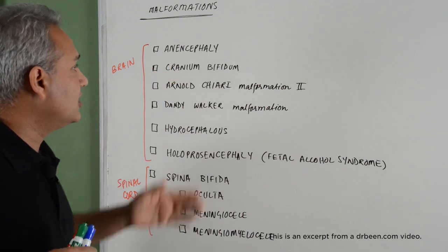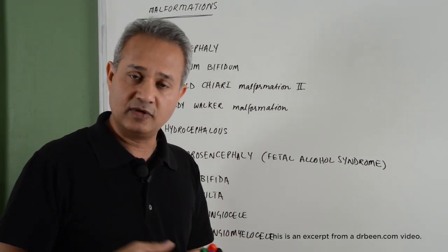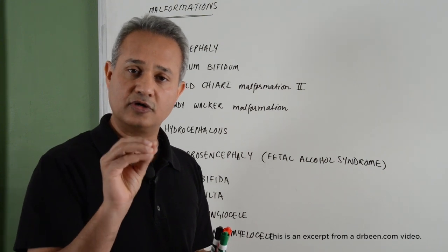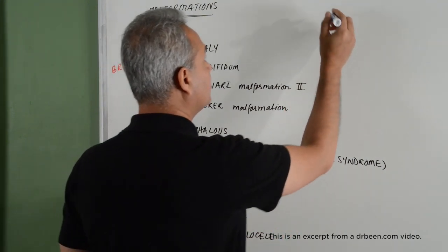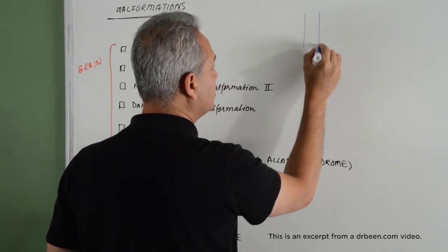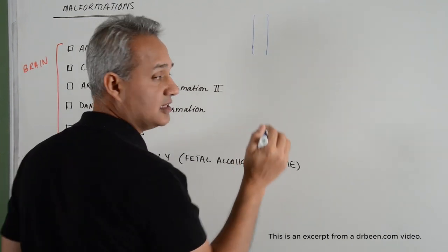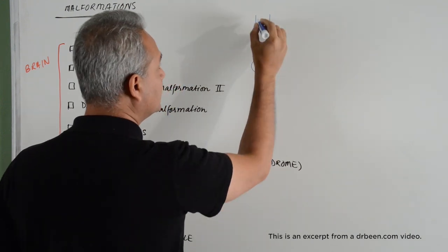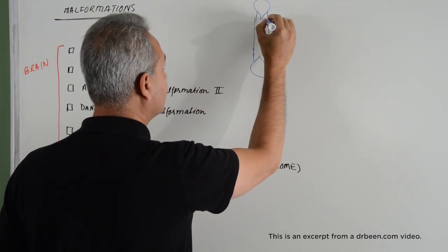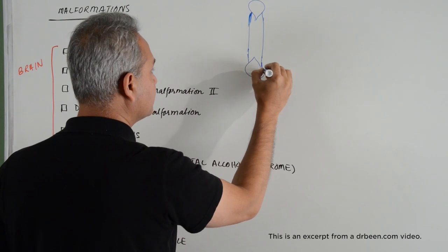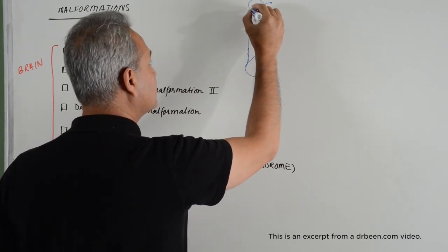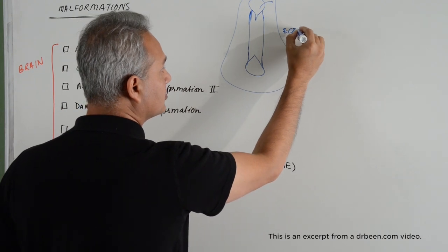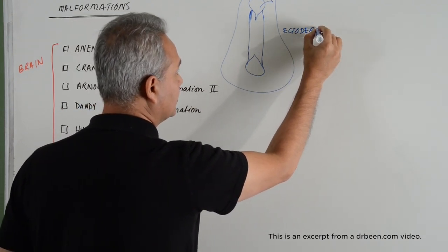Now let us start. First is anencephaly. Anencephaly, as we were talking about in our previous two lectures, occurs because of lack of closure of the cranial neural pore. If I make the neural tube here, the neural tube during development has a caudal neural pore that is open and then a cranial neural pore that is open. Through these neural pores, the CSF is actually appearing out. Here is the ectoderm.